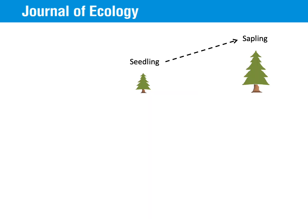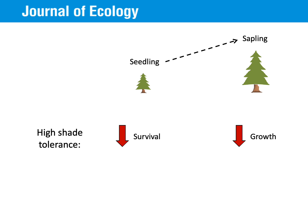With that in mind, in conclusion, we found that this diversity-maintaining process, CNDD, acts differently depending on the characteristics and age of the tree. As seedlings, having high shade tolerance may reduce effects of CNDD. As seedlings grow to be saplings, having high shade tolerance may reduce your growth to ensure survival. And associating with ectomycorrhizae as a sapling may reduce the effects of CNDD.